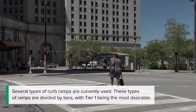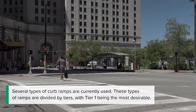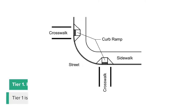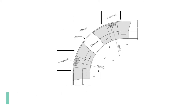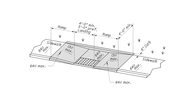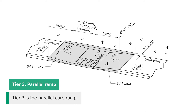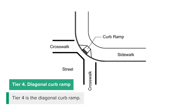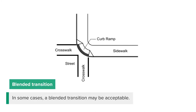Several types of curb ramps are currently used. These types of ramps are divided by tiers, with Tier 1 being the most desirable. Tier 1 is the perpendicular curb ramp. Tier 2 is the combined ramp, which is like two ramps in one. Tier 3 is the parallel curb ramp. Tier 4 is the diagonal curb ramp. In some cases, a blended transition may be acceptable.